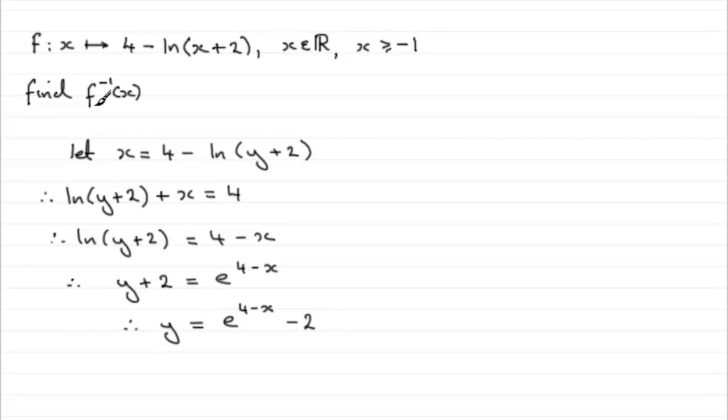So to get the inverse function of f, then all I've got to do is replace this y with f to the minus 1 of x. And then just copy this down. So therefore, I have that the inverse function of f is equal to e to the 4 minus x minus the 2. And there you have it.